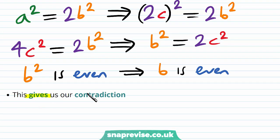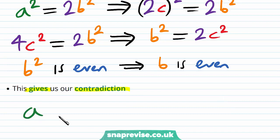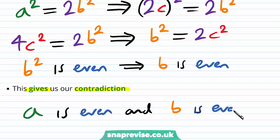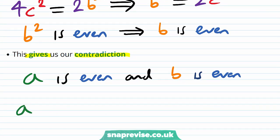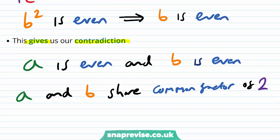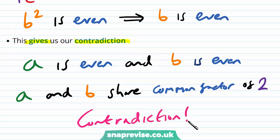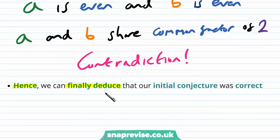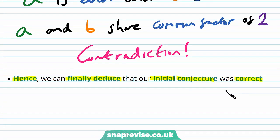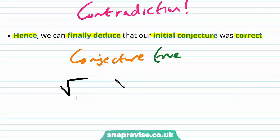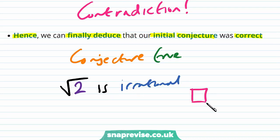This gives us our contradiction. We have that a is even and also that b is even. By definition this means a and b share a common factor of 2. But above we assumed they share no common factors — this is a logical inconsistency. Hence we can finally deduce that our initial conjecture was correct: root 2 is irrational. We put down our square box to finish the proof.